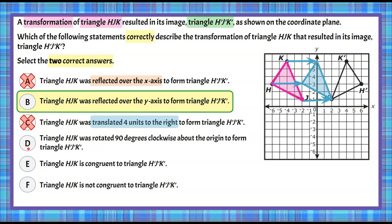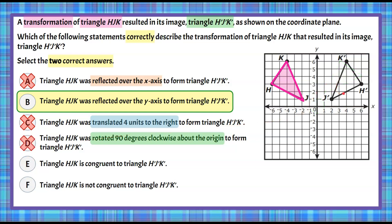Let's look at answer choice D: triangle HJK rotated 90 degrees clockwise about the origin. Identifying the origin and rotating clockwise, each vertex moves to a new position — for example, one vertex goes to (3, 6) and another to (6, 4). This rotated image is clearly not H'J'K', so answer choice D is not correct.